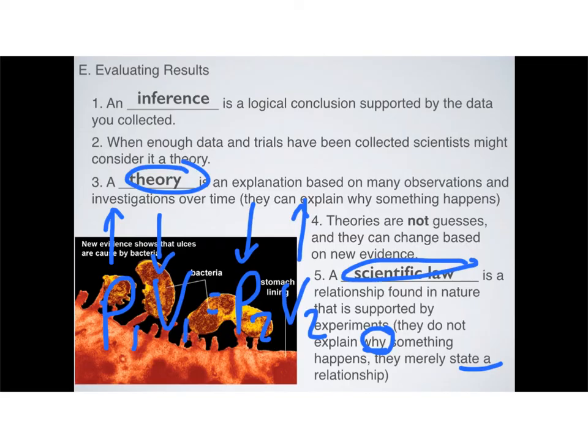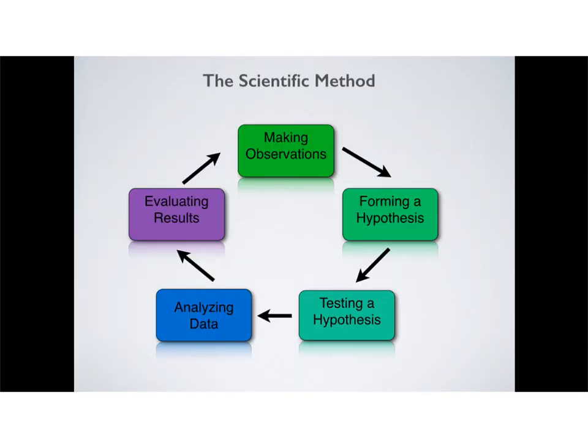Theories, on the other hand, they try to explain why something actually happens. So these are our five steps in the scientific method. Make sure that you understand them and all of their sub points.